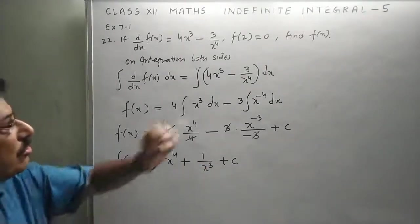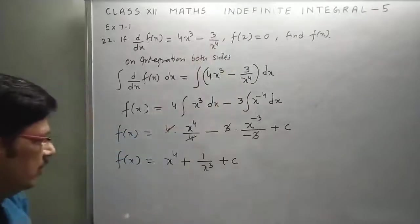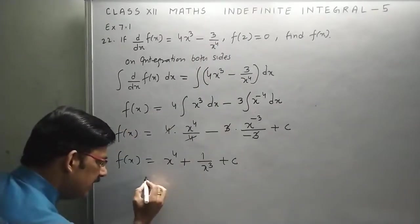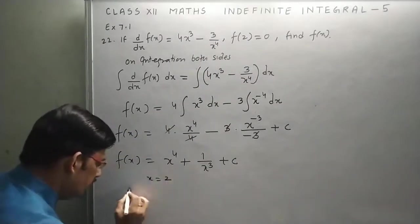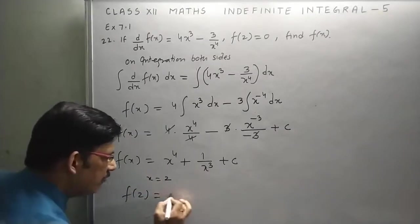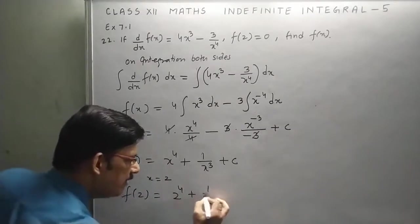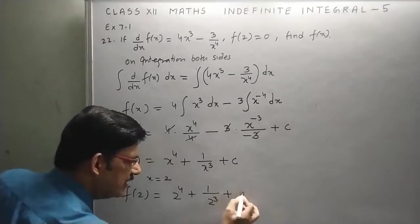But we have to find c also and a condition is given. So, just replace x is equal to 2. You get f(2) is equal to 2⁴ plus 1 upon 2³ plus c.